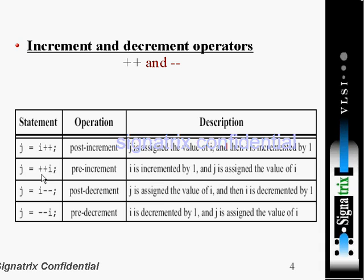Then the opposite of these two things - post-decrement and pre-decrement. Pre-decrement means i is decremented by 1, and j is assigned the value of i. After decrementing, then assignment happens.